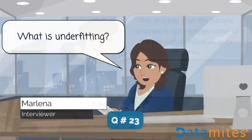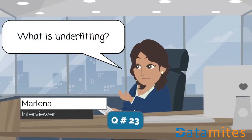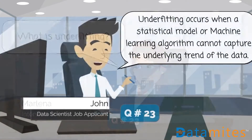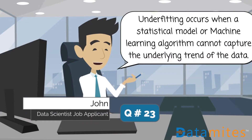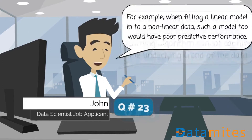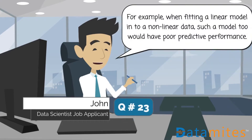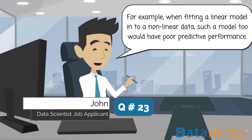What is underfitting? Underfitting occurs when a statistical model or machine learning algorithm cannot capture the underlying trend of the data. Underfitting would occur, for example, when fitting a linear model into non-linear data — such a model would have poor predictive performance.